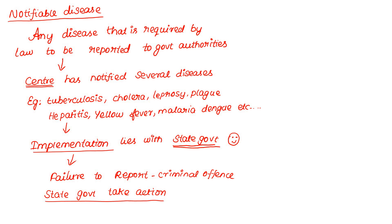There are many notifiable diseases including Tuberculosis, Cholera, Leprosy, Plague, Hepatitis, Yellow Fever, Malaria, and Dengue. We must inform the government authorities about these diseases.